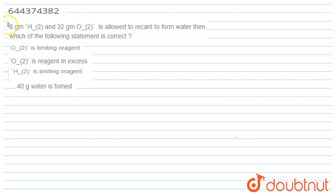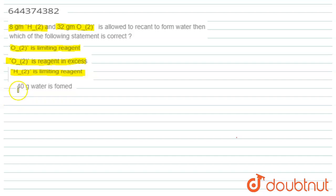The question is: 8 grams of H₂ and 32 grams of O₂ are allowed to react to form water. Which of the following statements is correct? Option 1: O₂ is the limiting reagent. Option 2: O₂ is the reagent in excess. Option 3: H₂ is the limiting reagent. Option 4: 40 grams of water is formed.